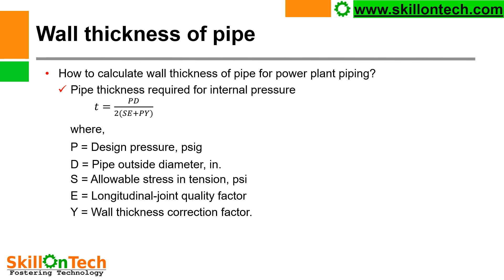Wall thickness of pipe — how to calculate wall thickness of pipe for power plant piping? The pipe thickness is required to resist internal pressure. The formula for calculation of thickness is: T = PD / (2SE + PY), where P is design pressure, D is pipe outside diameter in inches, S is allowable stress in tension (PSI), E is the longitudinal joint quality factor, and Y is the wall thickness correction factor.